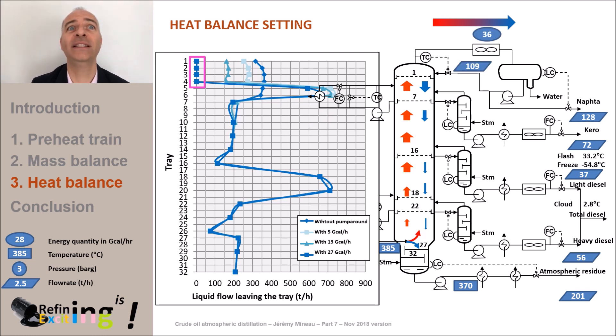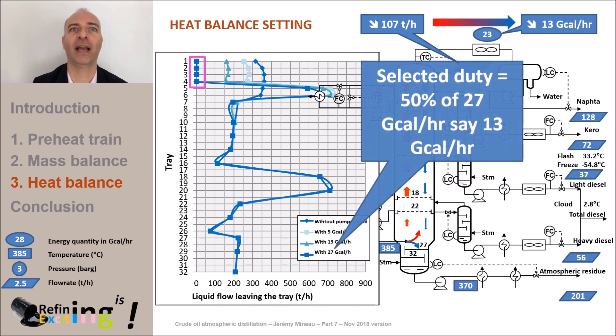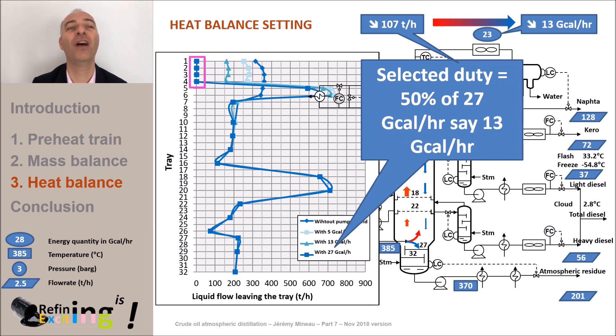As for the bottom pump around, it is necessary to choose a quantity of energy to be extracted and in our case we will choose 50% of the maximum possible removable duty. That is to say 50% of 27 gigacalories per hour. It means 13 gigacalories per hour.